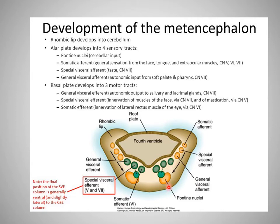The alar plate forms four sensory columns: the pontine nuclei, the somatic efferent column, the special visceral efferent for taste, and the general visceral afferent. The basal plate develops into three motor columns: the general visceral efferent, the special visceral efferent, and the somatic efferent.